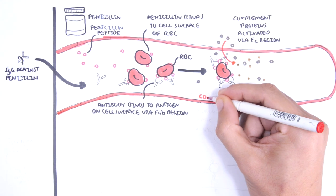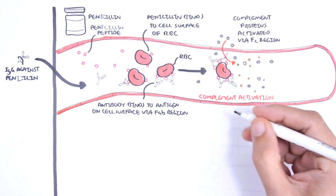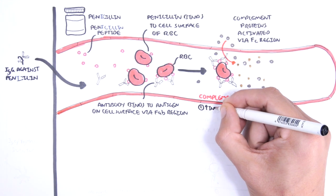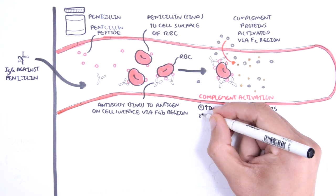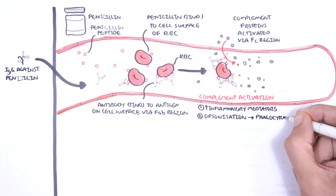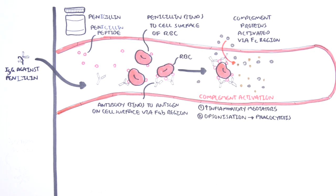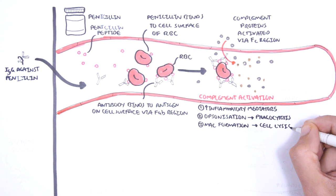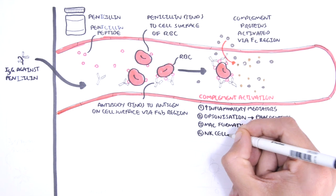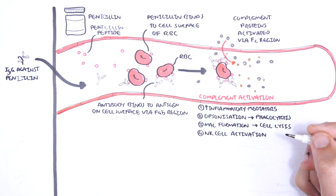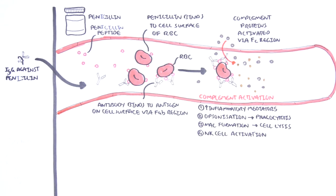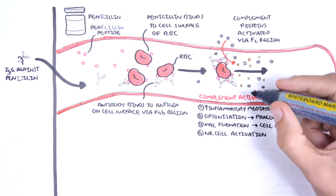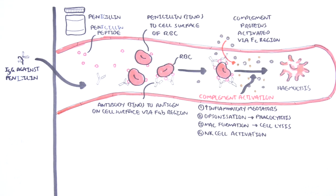Complement activation leads to four main things. Number one, it increases inflammatory mediators and thus the inflammatory response. Number two, it causes opsonization on the membrane surface, leading to phagocytosis. Number three, complement proteins form the membrane attack complex, which causes the cell to lyse. And number four, complement proteins can activate natural killer cells, which will cause the natural killer cell to kill that particular cell. Thus, in this scenario, complement activation leads to red blood cell death, or hemolysis, resulting in anemia.